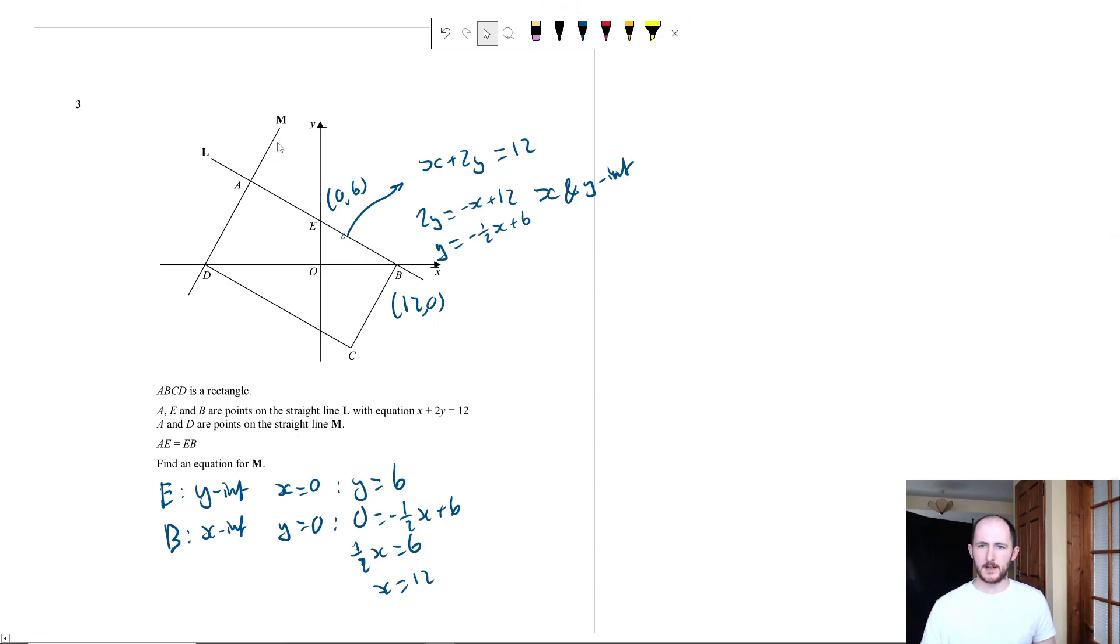So now it's a good time to actually think about what's happening with this question. So we want to find an equation for this straight line here, M. So if we write M, that's going to have Y equals MX plus C. Now, because it's a rectangle, I know that the line AEB is perpendicular to line DM. So the gradient of it is going to be the negative reciprocal of the gradient here. So the gradient here is minus 1 half, so you flip it to make it 2, and then you change the sign to make it positive 2. So we have Y is equal to 2X plus C.